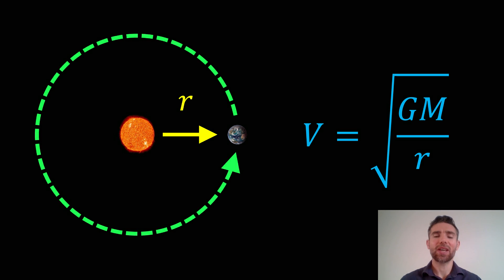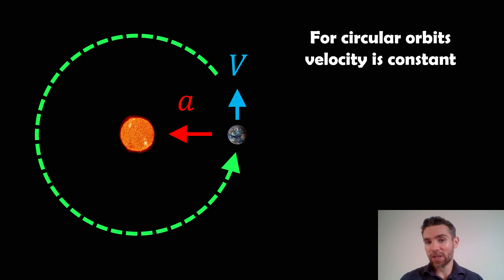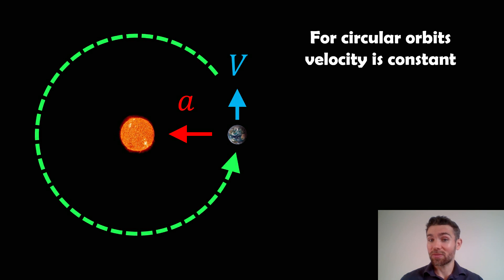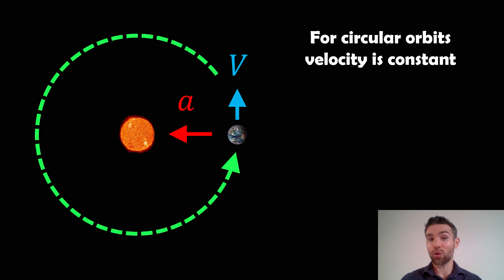It's not quite the same if it's an elliptical orbit, but in this video we're going to have a look at how we get the orbital velocity if the orbit is circular. Now for a circular orbit, the orbital velocity will be constant — it does not change during the orbit. It will be going the same velocity all the way around; it just obviously changes direction.